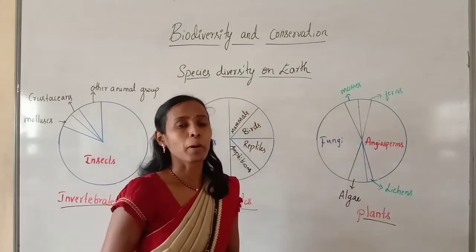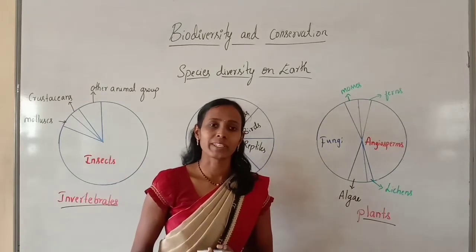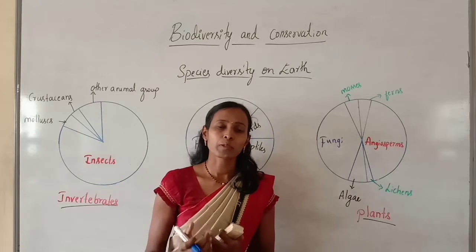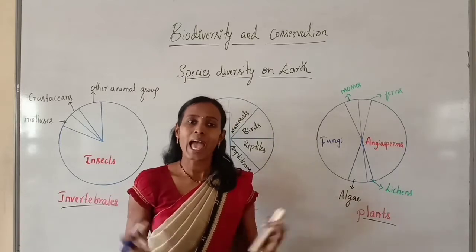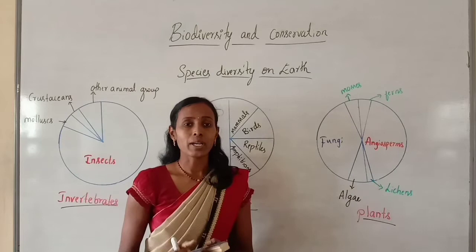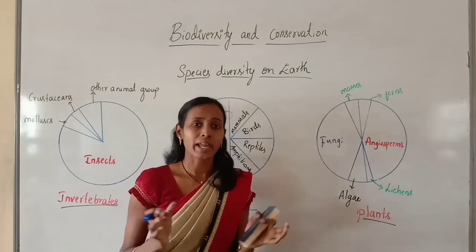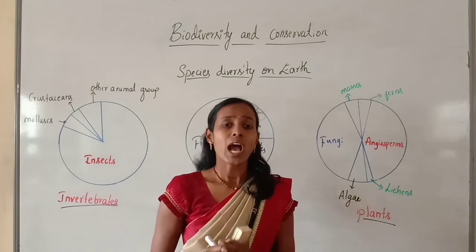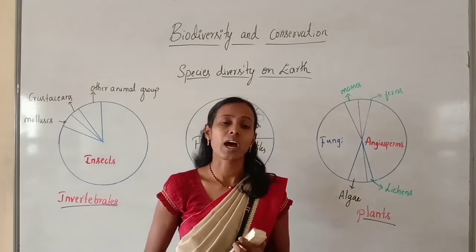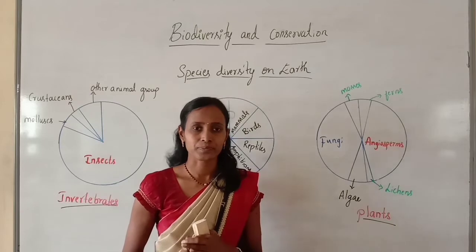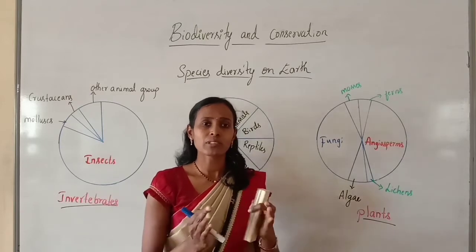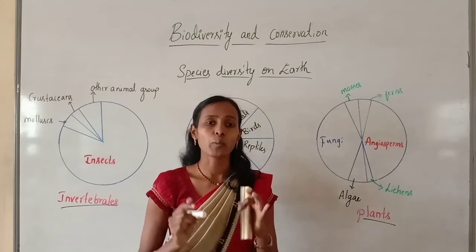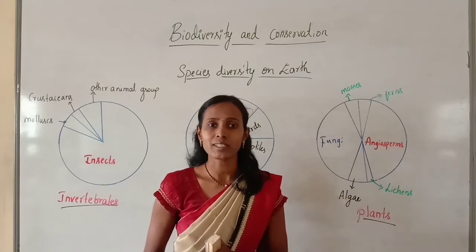There are population records of how many species have been recorded so far, but it is not very easy to answer the question of how many species are there on Earth. We know some number of species which have been recorded, but we have no idea of the total number of species on Earth.